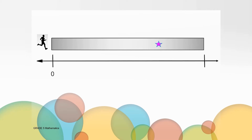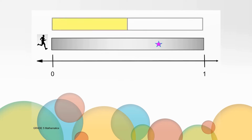Will this number line help? It's numbered 0 to 1 because the entire track length represents the whole. If I use the halfway mark from our previous slide as a benchmark, then I know that the star is at a distance greater than 1 half or 5 tenths of the track. Do you want to change your estimate of where the star is on the track?